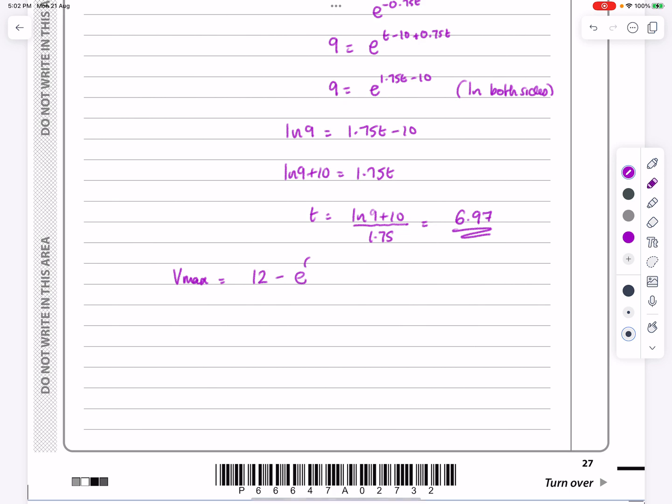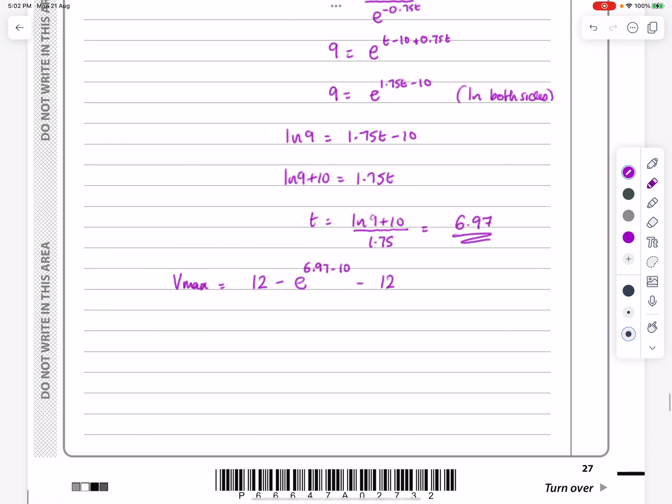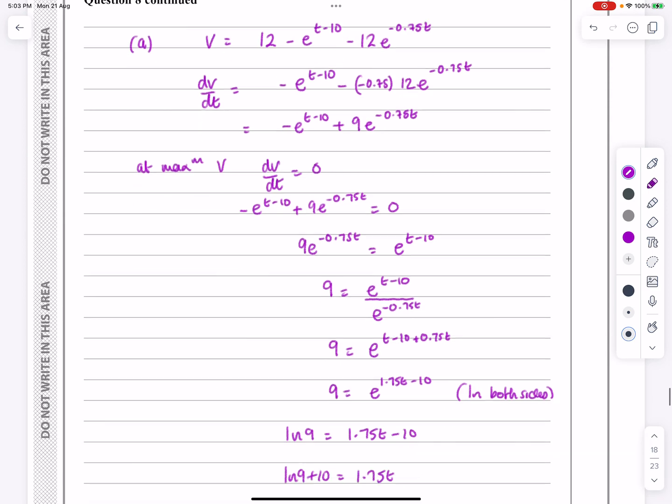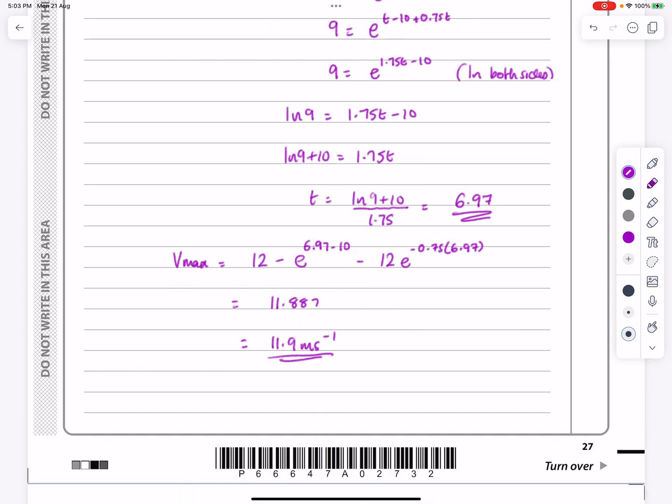I've done 6.97. So v max, what I'm actually looking for, is putting that into the function now. So it's 12 - e^(6.97-10) - 12e^(-0.75 × 6.97). So just take your time, plug that all into the calculator, being careful. It comes out as being 11.887, which I then rounded up to 11.9. Make sure I include my units. And it doesn't say anything about decimal places or significant figures, so 11.9 seems a sensible answer to give there.